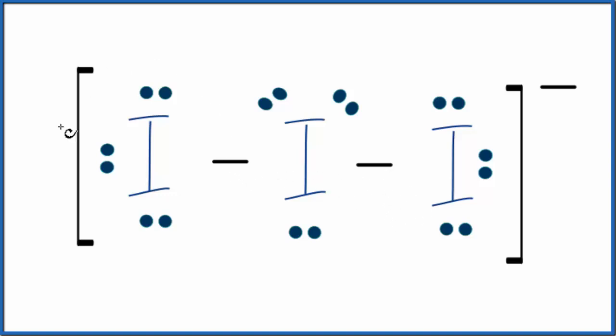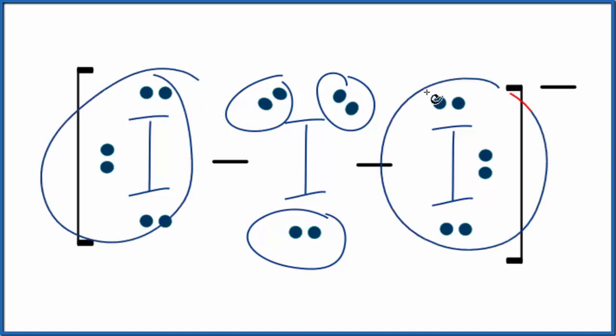You can imagine that these two iodines here on either side will push away from each other. But we also have one, two, three lone pairs. They occupy space. They'll push away too. So we have a total of these five things here, two single bonds and three lone pairs.